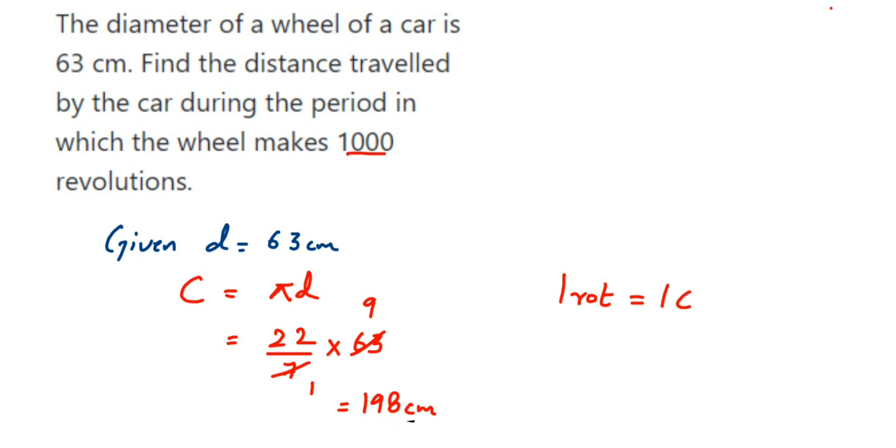You have to just multiply with the circumference: 1000 into circumference of the wheel. So for 1000 revolution, let me write it like distance covered.